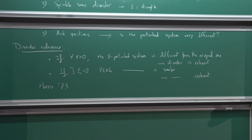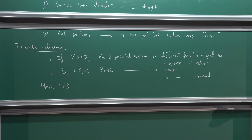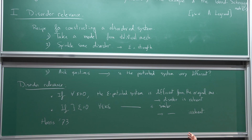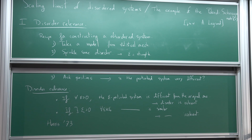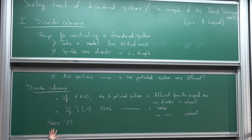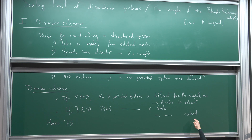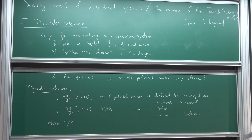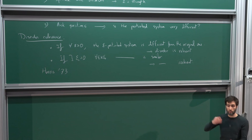The way you sprinkle the disorder may have an effect on disorder relevance, but by the Harris prediction it doesn't have much of an effect on whether it's relevant or not. When disorder is irrelevant, your perturbed system is similar to the original one — you know the perturbed system if you know the original one. But if it's relevant, then it's a very difficult question: you know the system behaves differently, but how does it behave? That's an important question and it's open in most cases.